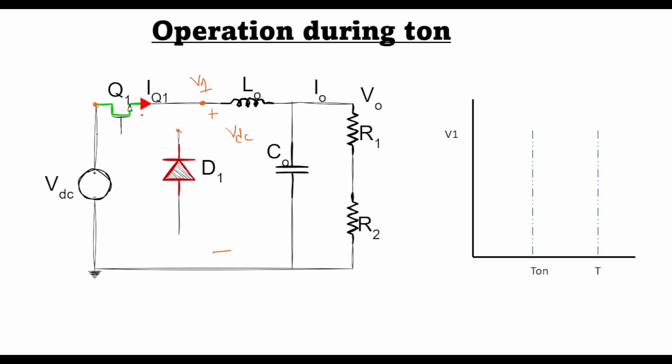So during t_on, if I have one switching period T, during t_on the voltage V1 is equal to Vdc. So this is the operation when the transistor is turned on.